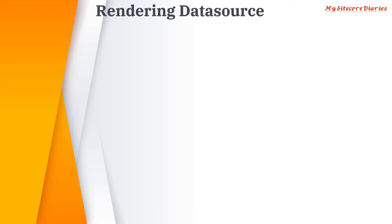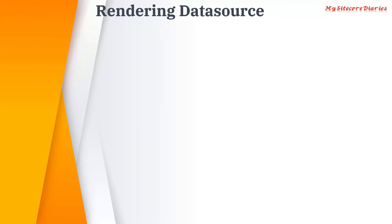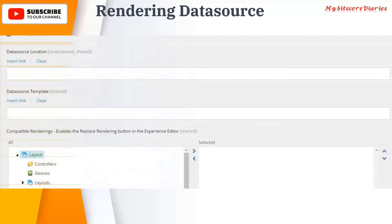We will see what is a rendering data source. For any rendering there will be a section where we can set the rendering data source. It will look like this where you have a data source location, data source template, and compatible renderings. These are the three fields which are important to set for any rendering if you are setting up the data source.